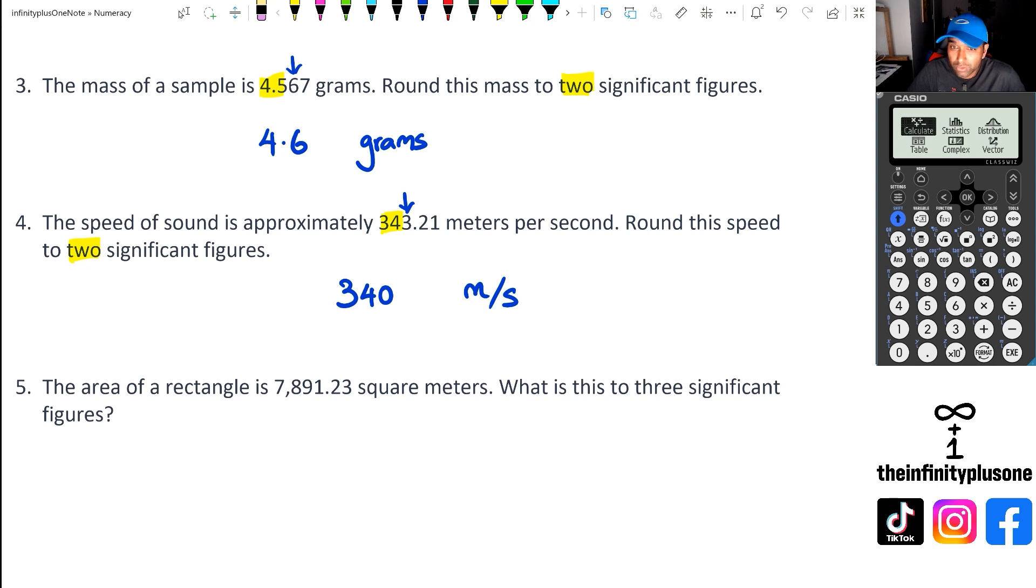Finally, looking at question number five, the area of rectangle is this square meters, and we're looking for three significant figures, which means we're looking at those three numbers. So it's going to be seven, eight, nine. And then the number straight after that, which happens to be a one, so that's actually less than five. So we can say this answer is going to be 7,890 square meters or meters squared.